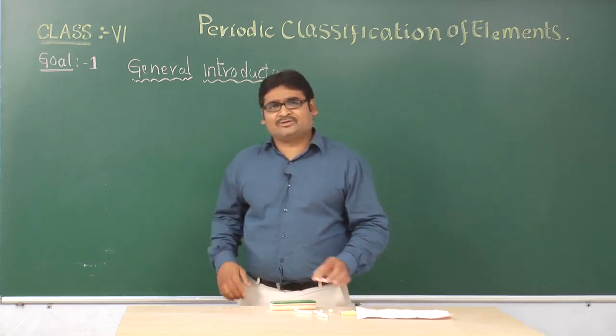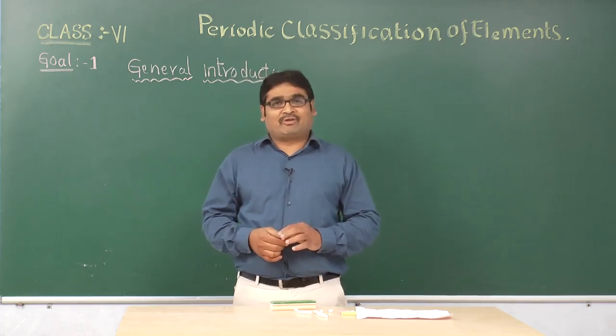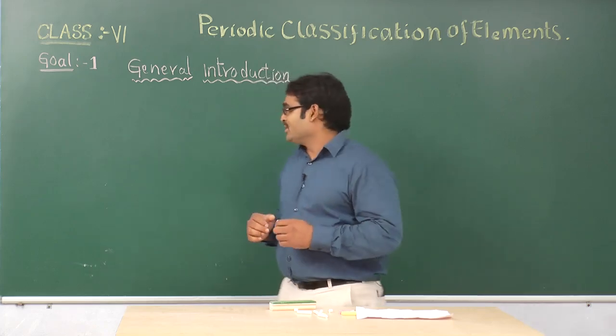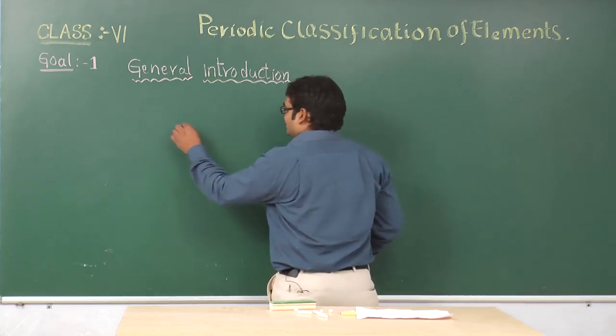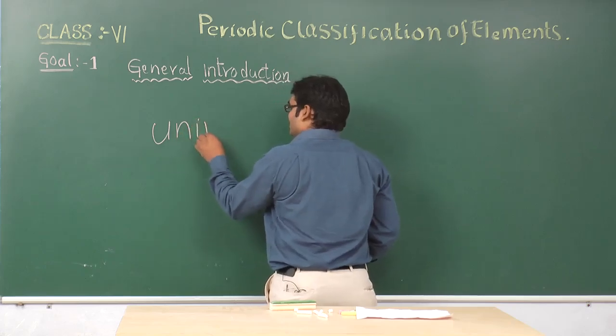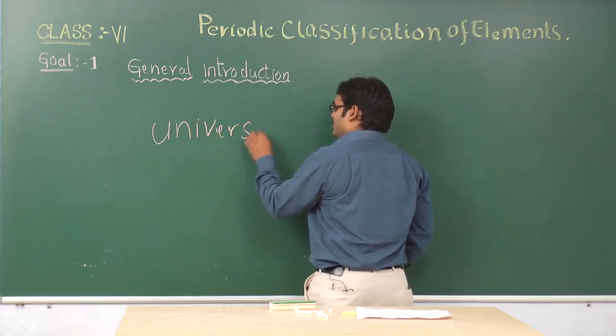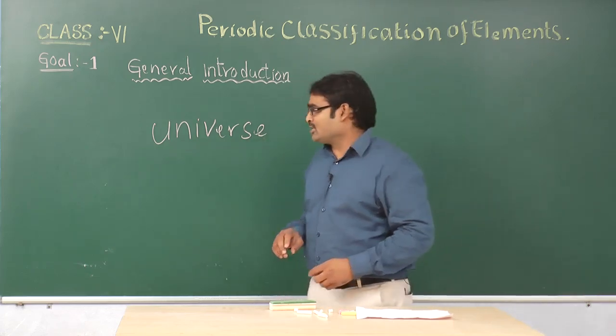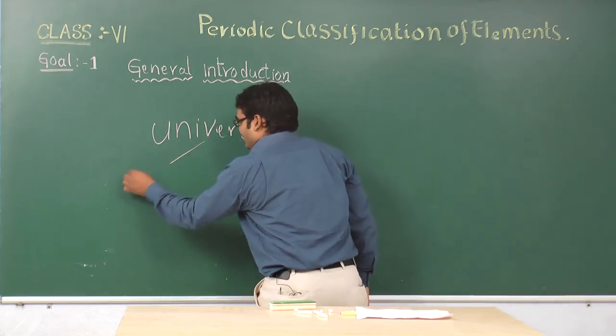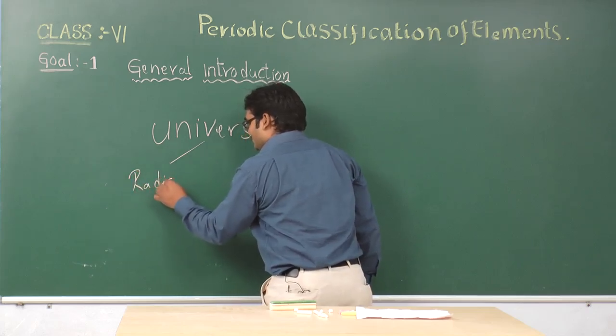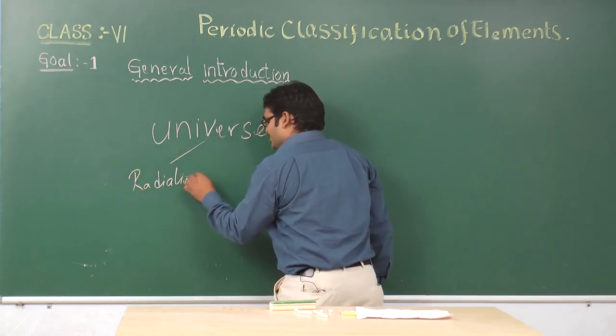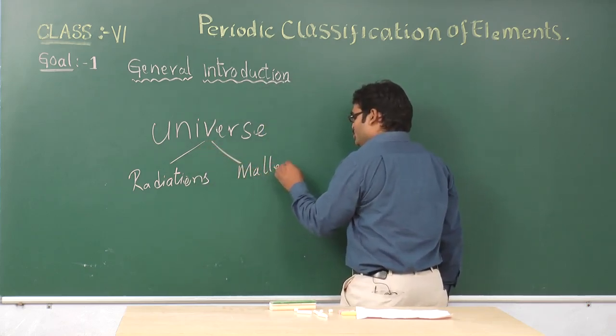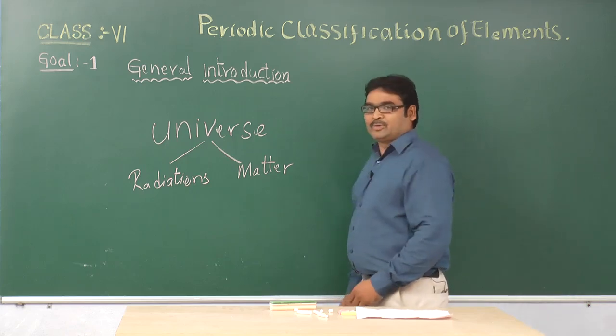Now, we live in this universe. Actually what is universe? What is it made up of? So if you look at the universe, universe consists of only 2 important things. What are those? They are radiations and matter. So the whole universe is made up of these 2 important things.